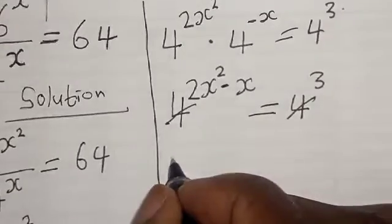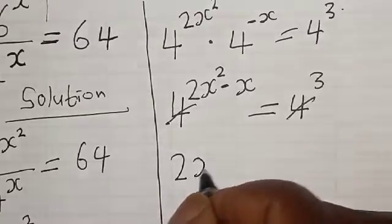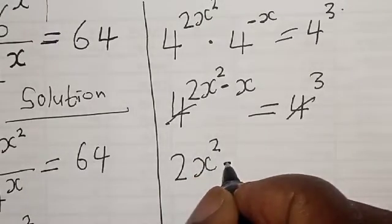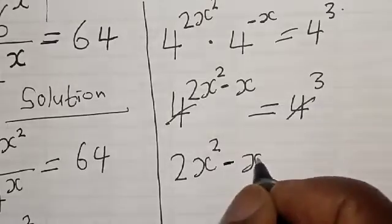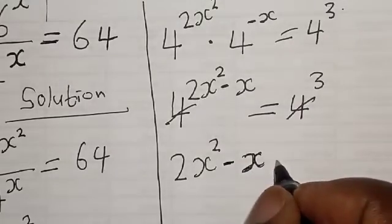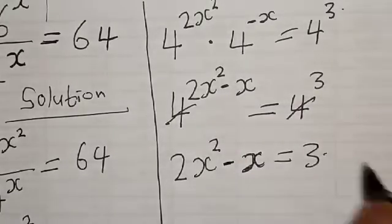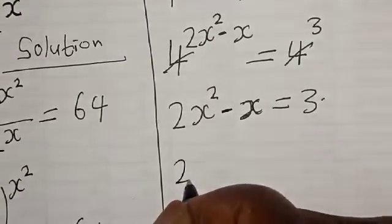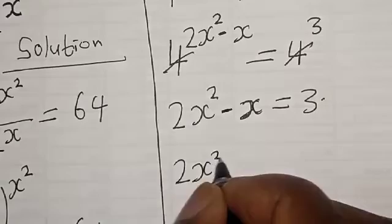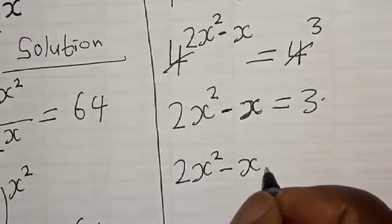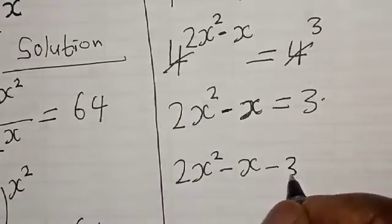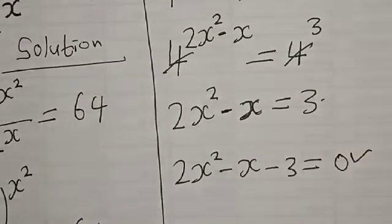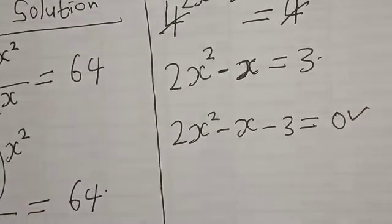Now, since the bases are equal, we equate the exponents: 2s squared minus s is equal to 3. Rearranging, we have 2s squared minus s minus 3 is equal to 0. This is a quadratic equation, so let's solve it by the factorization method.